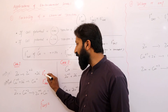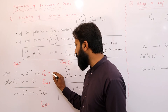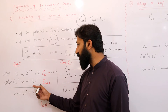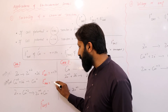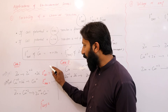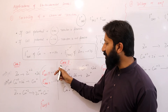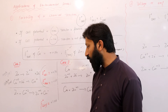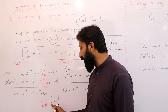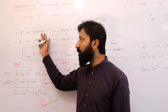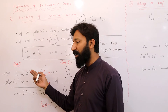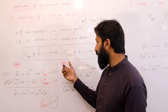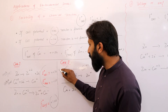Case 1 में zinc की oxidation हुई तो zinc का oxidation potential है plus 0.76 V, और copper की reduction potential Electrochemical Series से है plus 0.34 V। इन दोनों का sum करते हैं तो cell potential की value बनती है plus 1.10 V। Cell potential positive है, तो reaction is feasible। अगर किसी galvanic cell में दो electrodes का cell potential positive हो तो reaction feasible होती है।